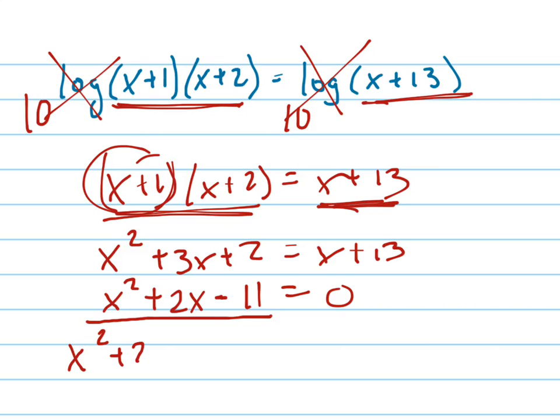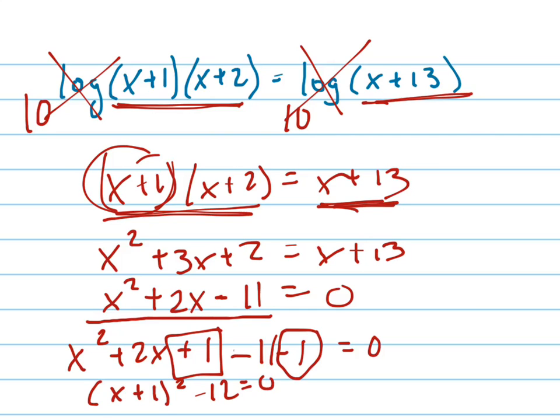x squared plus 2x plus half of 2 is 1. 1 squared is 1. So I added 1. I have to also subtract 1 since I added 1, and that's minus 11. So I get x plus 1 squared minus 12 equals 0.